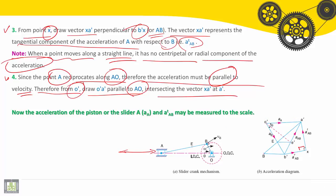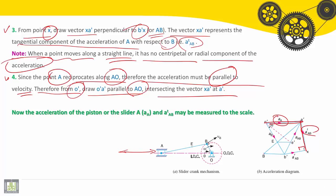Now we find A dash and then we can measure at the scale ATAB and AA. The acceleration of the slider A, and ATAB may be measured to this scale.